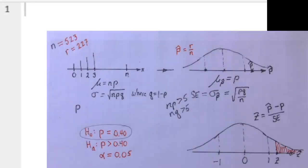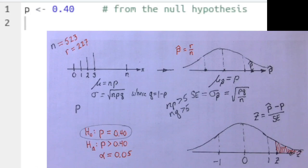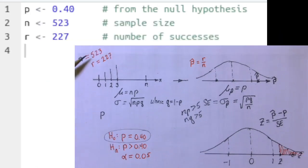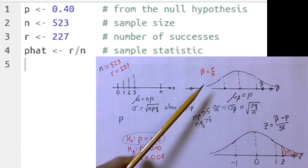This three-distribution diagram is the roadmap to the calculations needed for the hypothesis test. We're assuming the null hypothesis, so P will be 40%. Our sample size is 523, and the number of successes is 227. We can therefore calculate our P hat, which is R divided by N.